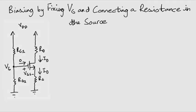Let's introduce you to techniques that provide stable and predictable operating points for MOSFETs functioning as amplifiers. The first of these techniques involves fixing VG and connecting a resistance in the source lead, as shown in the figure on your screen.